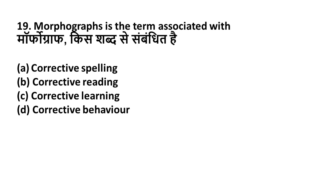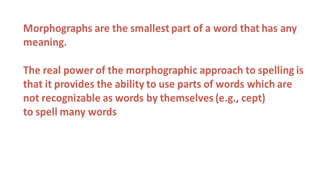Question 19: Morphographs is a term associated with — Option A: Corrective spelling, Option B: Corrective reading, Option C: Corrective learning, Option D: Corrective behavior. The right answer is Option A — Corrective spelling. Morphographs are the smallest part of a word that has any meaning. The real power of the morphographic approach to spelling is that it provides the ability to use parts of words not recognizable as words by themselves.